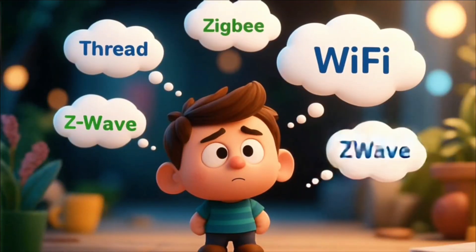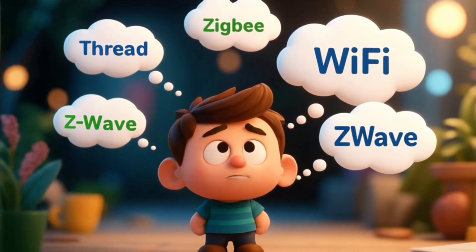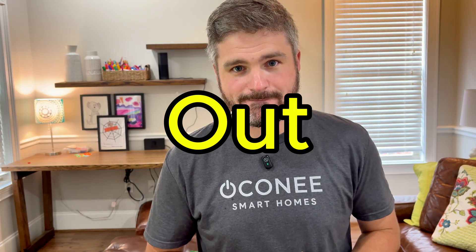Thread, Z-Wave, or even Wi-Fi make your eyes glaze over. You've probably heard YouTubers throw those terms around and thought this video's not for me. But don't zone out just yet. Here's what most people miss: lighting is usually the biggest category of devices in your smart home, so your smart bulbs are likely the first place in your network to feel the strain.